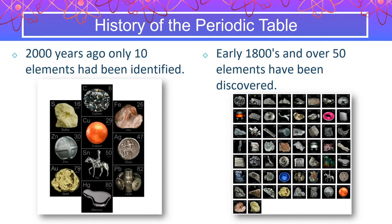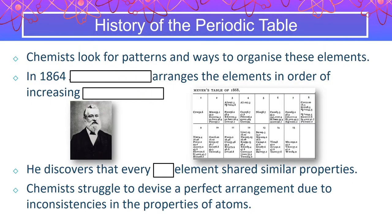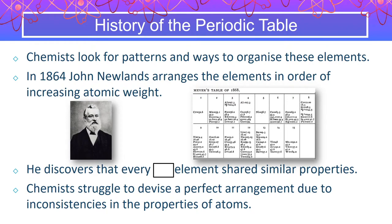The periodic table hasn't always existed. In the 1800s we were just starting to think about creating one and arranging our 50 or so elements. Chemists were looking for patterns and ways to organize these elements. In 1864, John Newlands arranged the elements in order of increasing atomic weight. This is important because that's not actually what we do today, but that's all they could do at the time — they could weigh things and organize by weight.